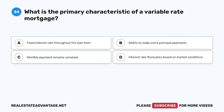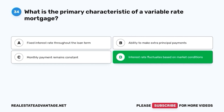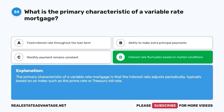Question 34. What is the primary characteristic of a variable rate mortgage? A. Fixed interest rate throughout the loan term. B. Ability to make extra principal payments. C. Monthly payment remains constant. D. Interest rate fluctuates based on market conditions. The correct answer is D. Interest rate fluctuates based on market conditions. The primary characteristic of a variable rate mortgage is that the interest rate adjusts periodically, typically based on an index such as the prime rate or treasury bill rate.